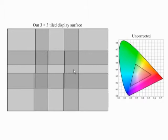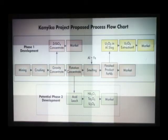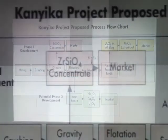Essentially any flicker in the brightness or discontinuity in the changing shape of the triangle signifies a sharp discontinuity of color. Hence, we see distracting color variations across the display.